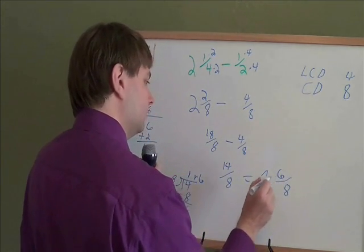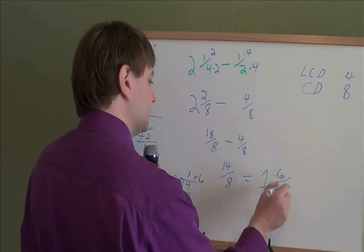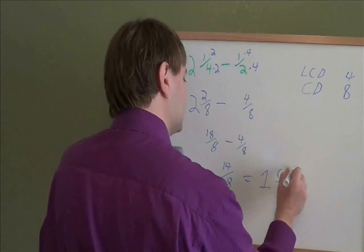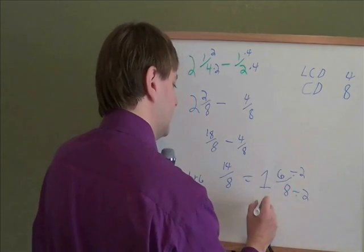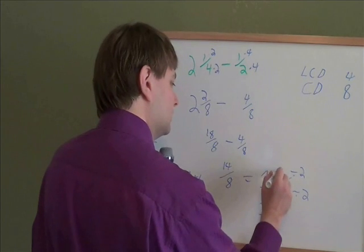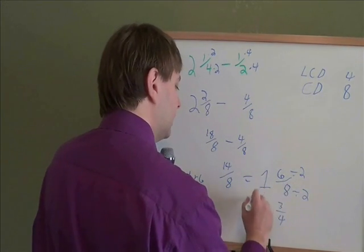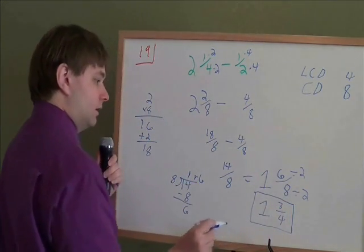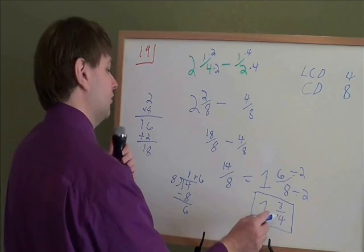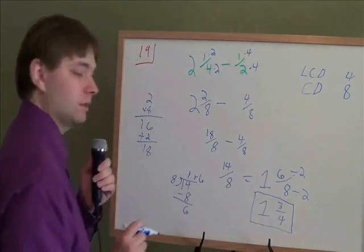And then, one more step. We've got 6 over 8. Turns out that that can be reduced because 6 and 8, they're both even numbers. They both divide by 2. You've got to reduce your fractions at the end. 6 divided by 2 is 3. 8 divided by 2 is 4. And that's our final answer. That will not reduce any more. There's nothing else that 3 and 4 both divide by except by 1. And that won't make it any simpler. So, we are done with 1 and 3 fourths.